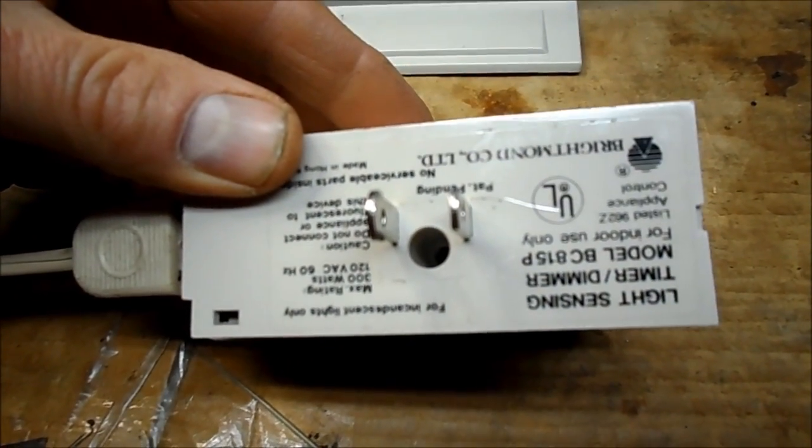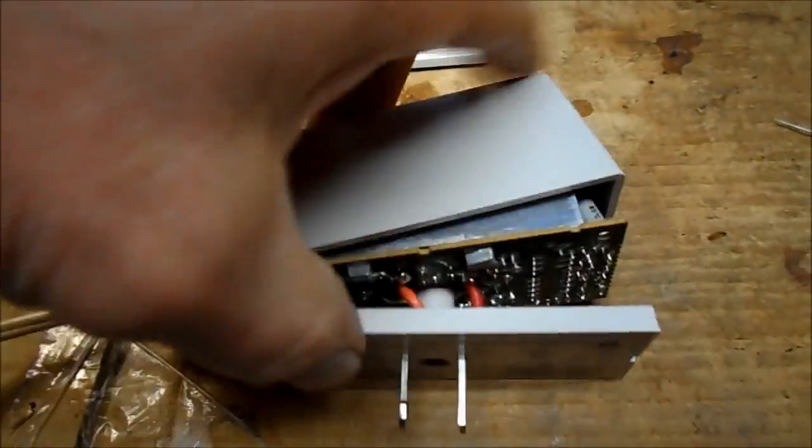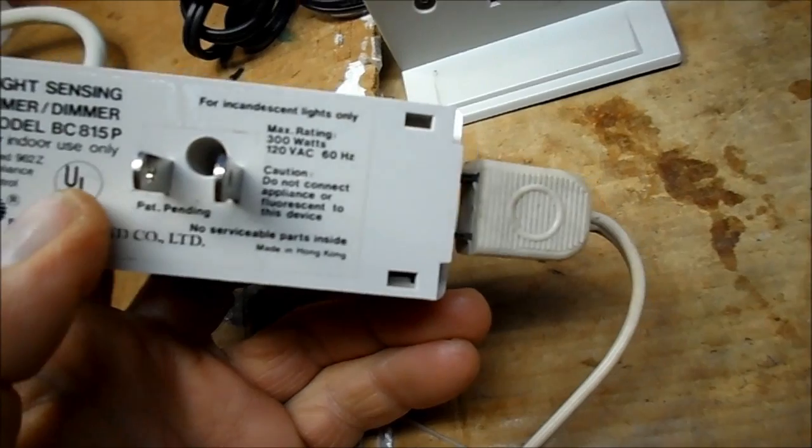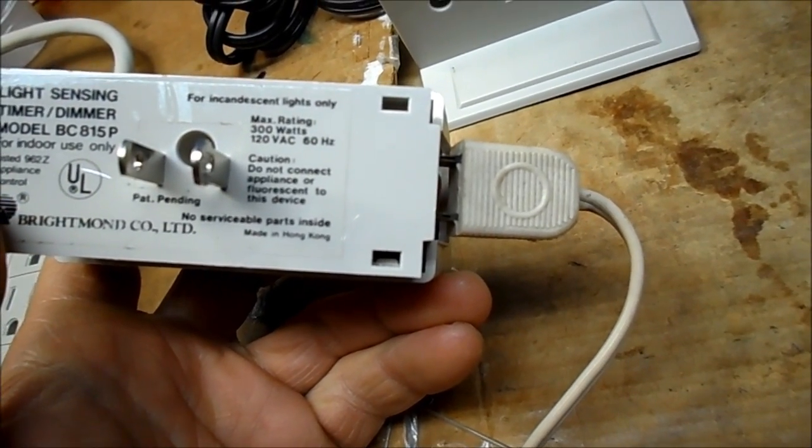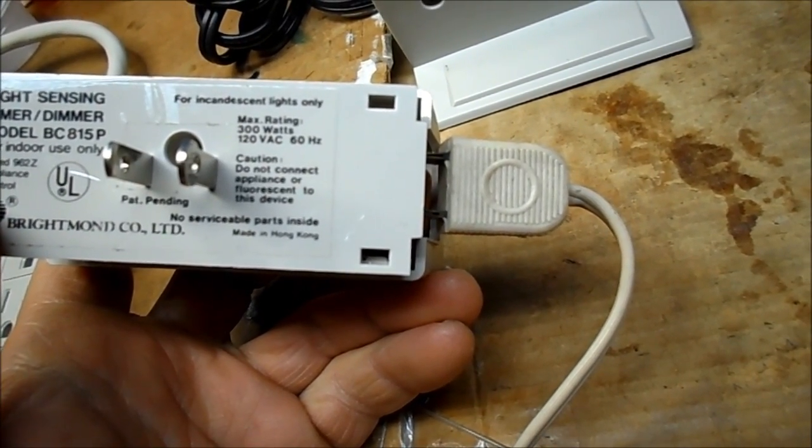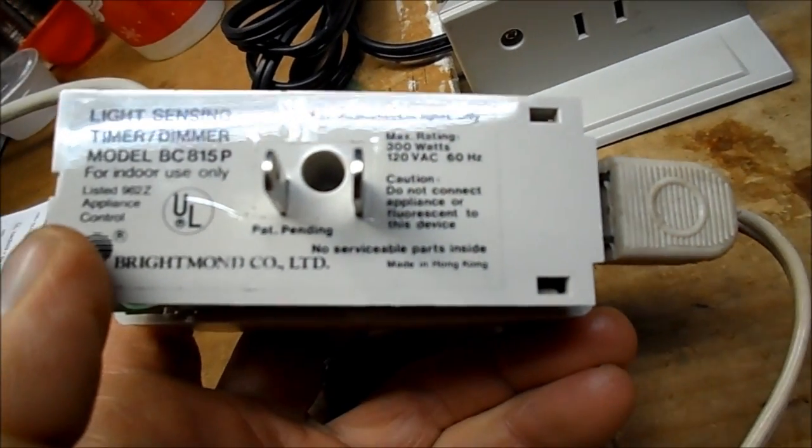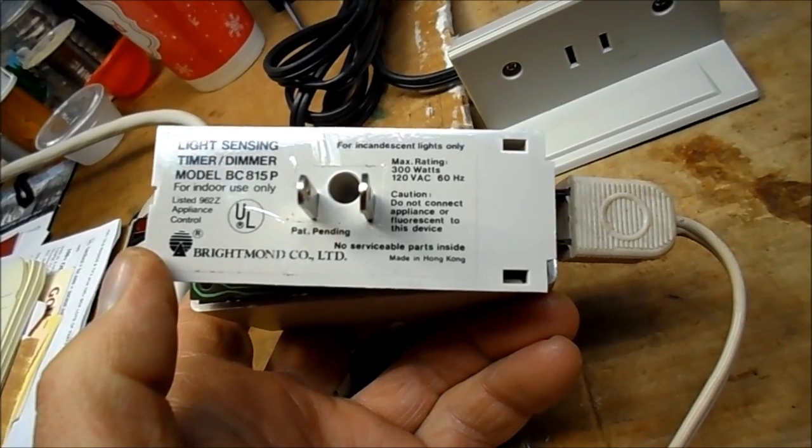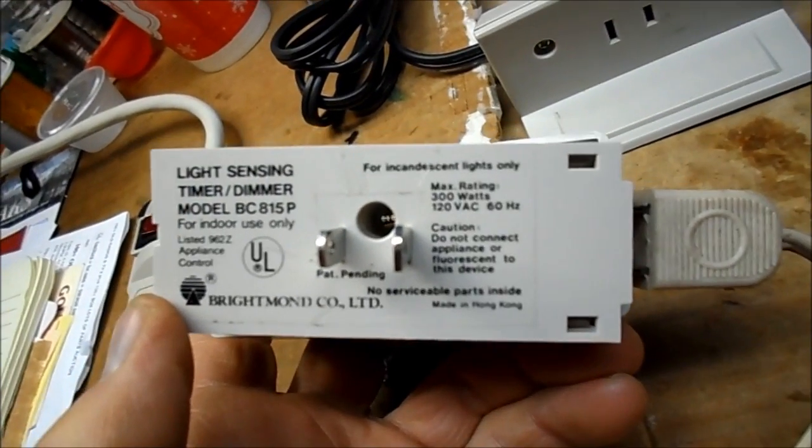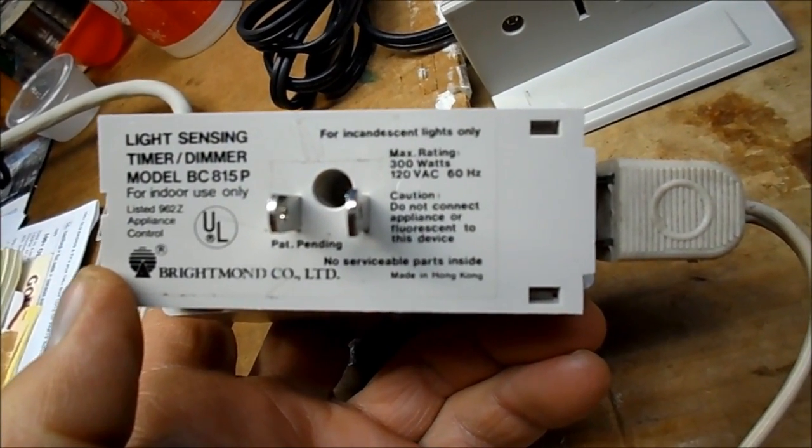Light sensing timer dimmer. Made in Hong Kong. Incandescent only. Do not use on fluorescent. Do not connect appliance or fluorescent to this device. No serviceable parts inside. Appliance control, light sensing timer dimmer.